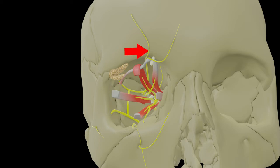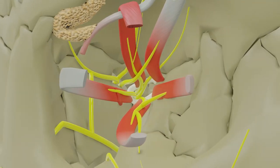The supraorbital nerve emerges from the orbit through the supraorbital notch or foramen, then runs upwards over the forehead and scalp. Apart from the skin of forehead and scalp, it also supplies the conjunctiva, the central part of the upper eyelid, and the frontal air sinus.